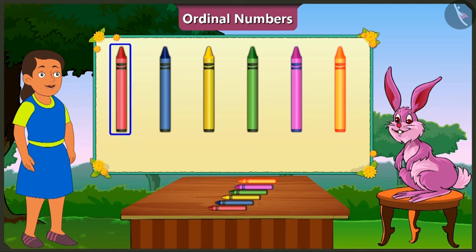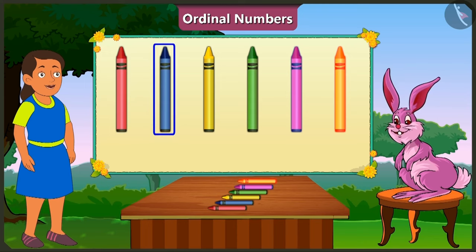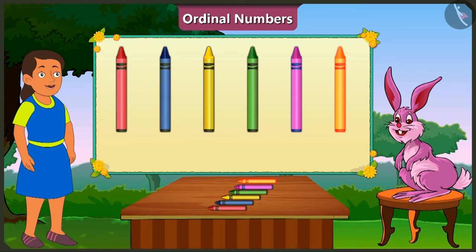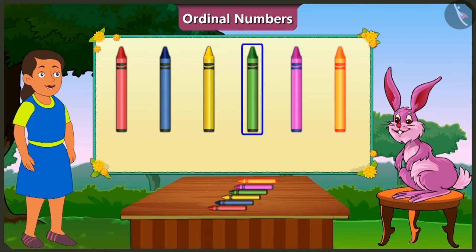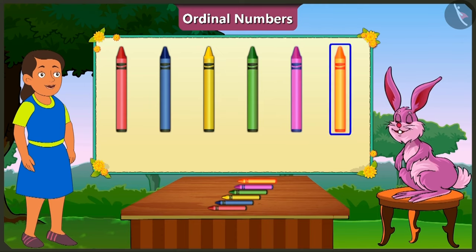Look here, the red crayon is at the first place. Blue crayon at the second place. Yellow crayon at the third place. Green crayon at the fourth place. At the fifth place is the pink crayon. And at the sixth place is the orange crayon.